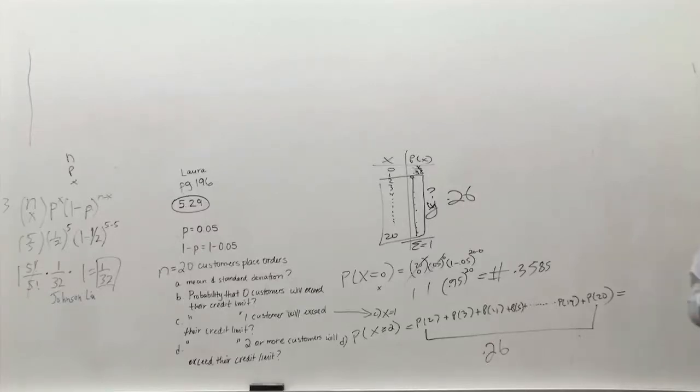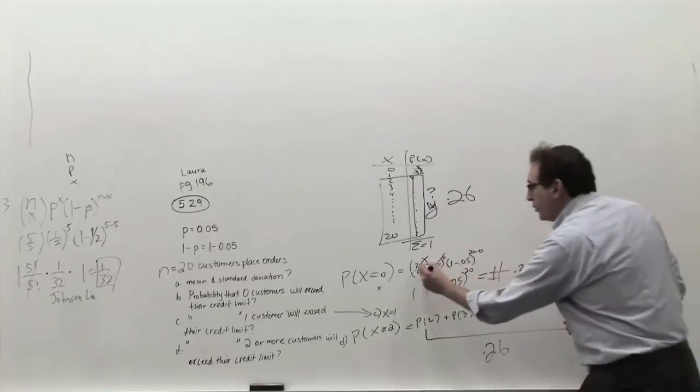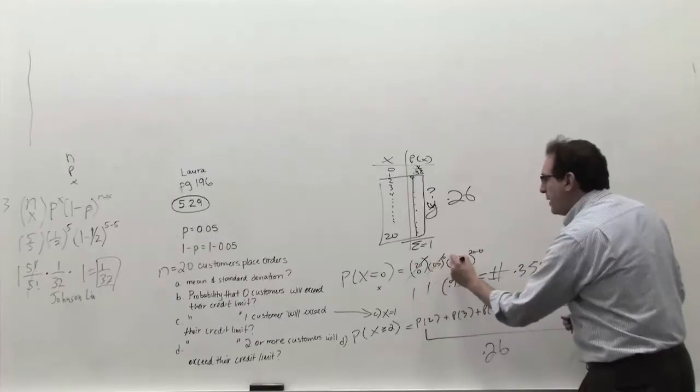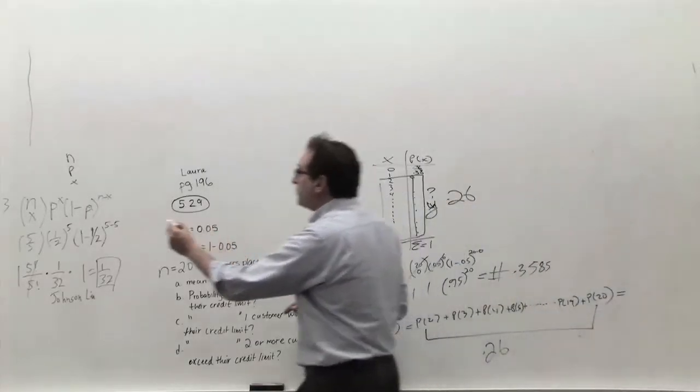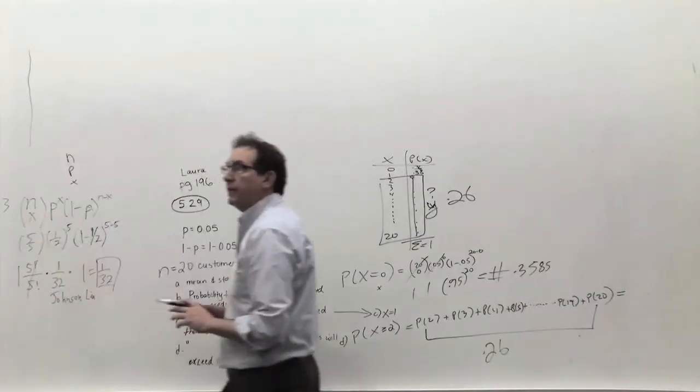How did you get 438? You're plugging in 20 choose 1, 0.05 to the 1 power, 0.95 to the other power. It's the same exact formula, but now instead of x equals 0, now x is equal to 1.